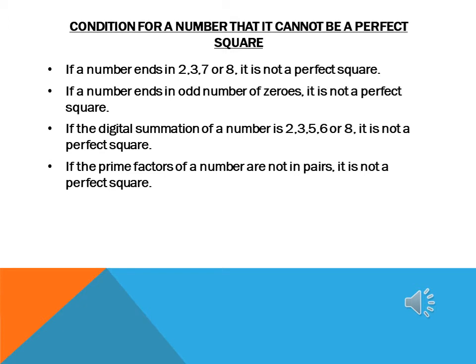If we are given a number and we have to conclude that it cannot be a perfect square, we have some conditions. If the digit at the ones place of a number is 2, 3, 7, or 8, then it is not a perfect square. If a number ends in an odd number of zeros, it is also not a perfect square. If the digital summation of a number is 2, 3, 5, 6, or 8, then it is not a perfect square. If the prime factors of a number are not in pairs, then the number is not a perfect square.